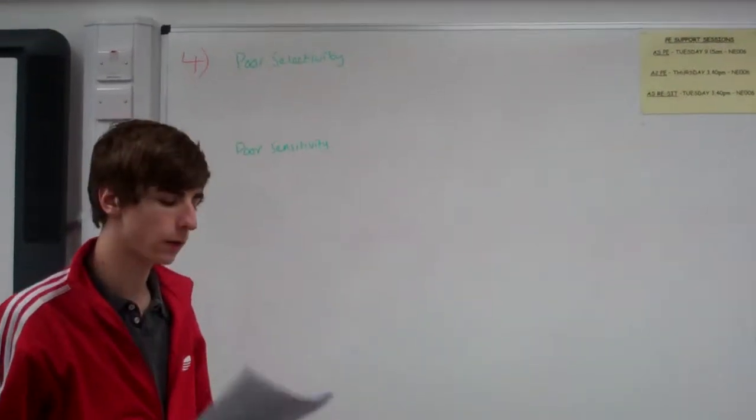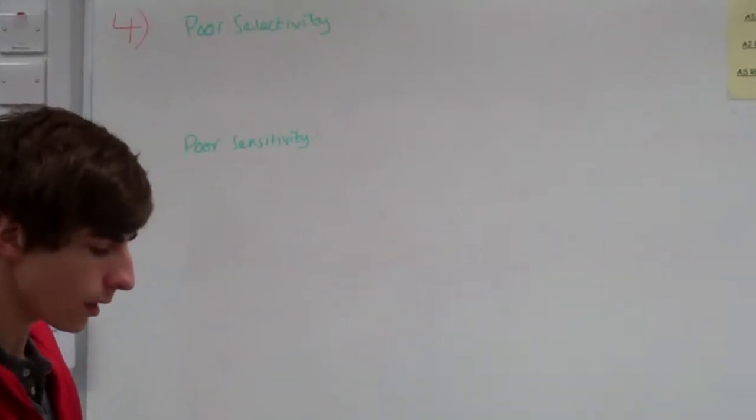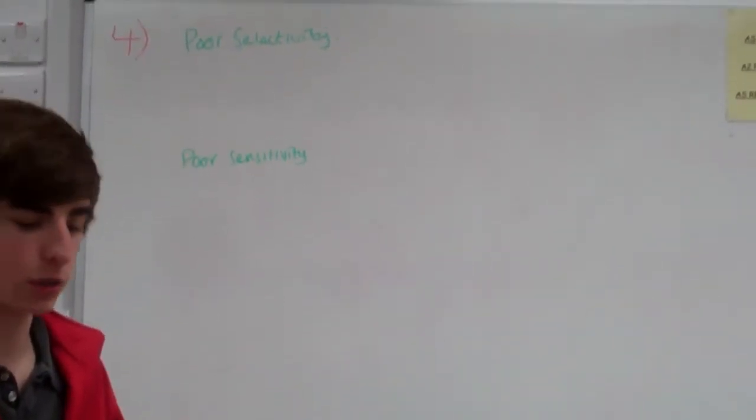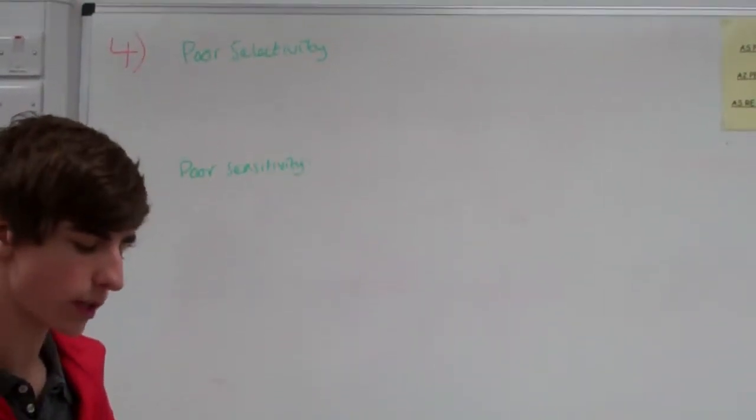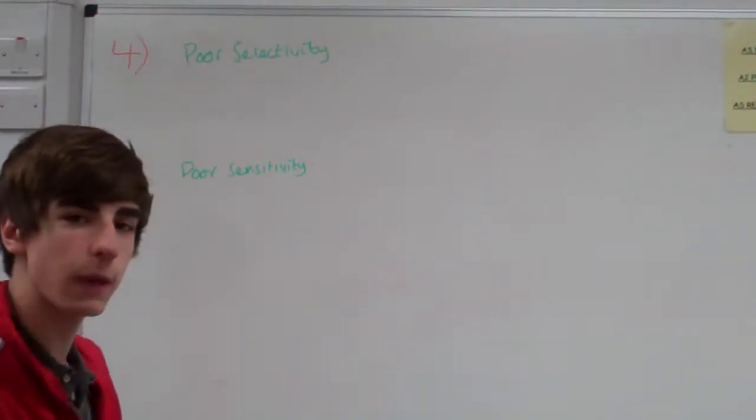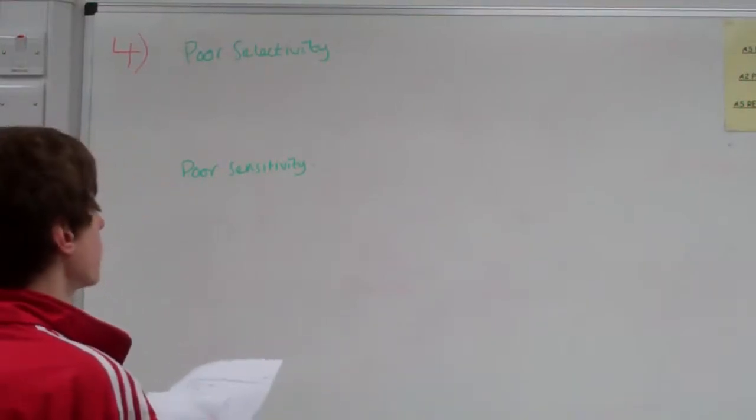Okay, part D asks: the simple radio receiver has two major disadvantages, which are poor selectivity and poor sensitivity. It then asks you to explain what both terms mean.